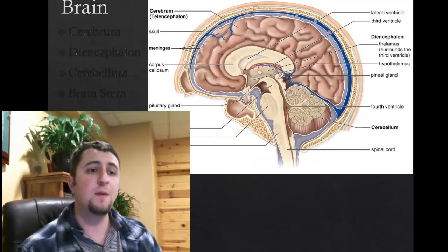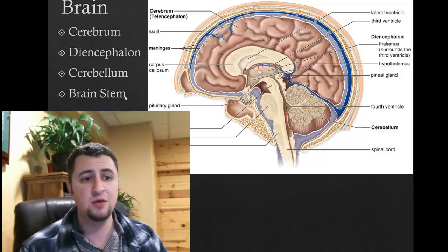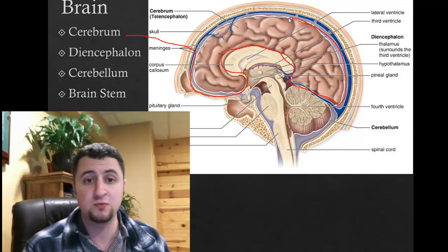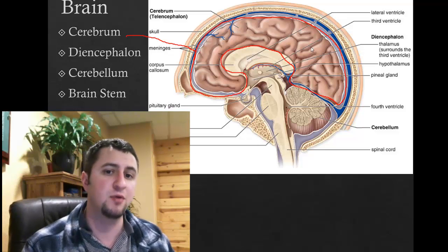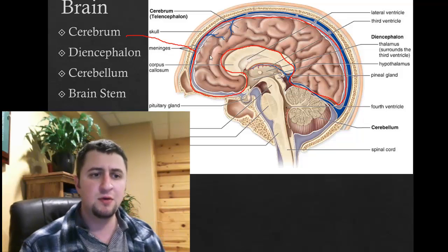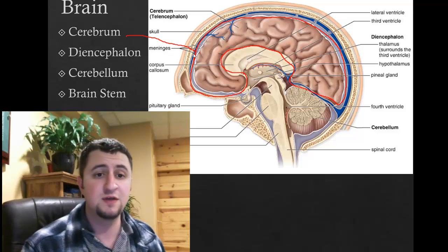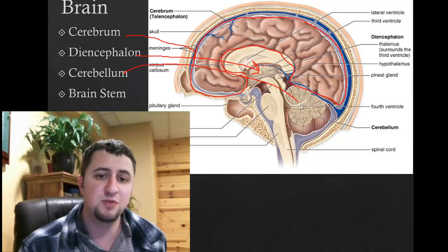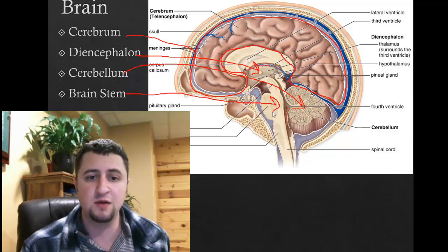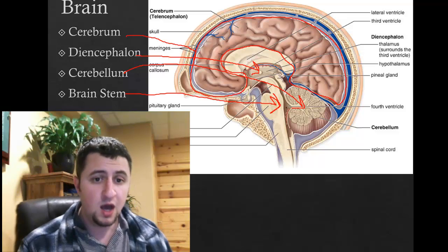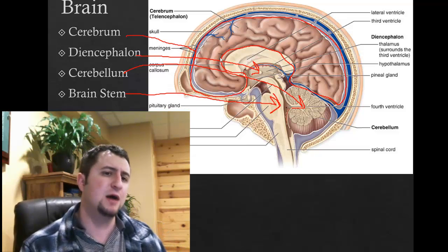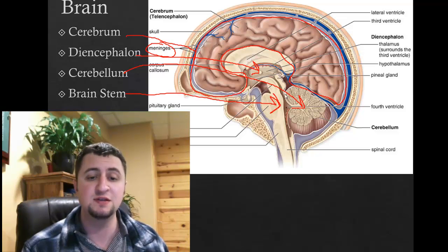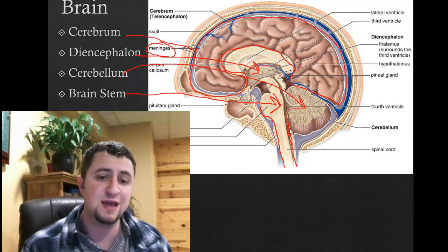The brain has four main parts: the cerebrum, the diencephalon, the cerebellum, and the brainstem. The cerebrum is the higher order, big, chunky portion of the brain with all those folds. The diencephalon is the middle part and includes the hypothalamus and the thalamus. The cerebellum is at the back, and the brainstem is the bottom part. An important thing to understand is that the brain, brainstem, and spinal cord are all covered by a membrane called the meninges — a three-layered membrane that protects the brain and spinal cord.